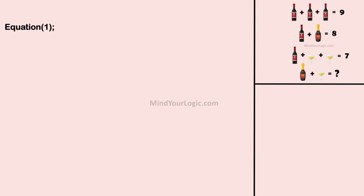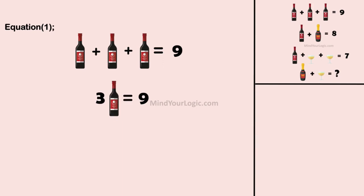Initiating with equation 1: Wine plus wine plus wine equals 9. On simplifying, we get wine equals 3.